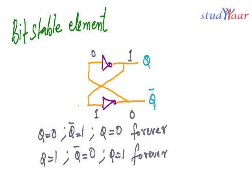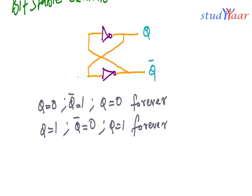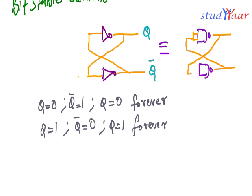This is your simplest memory element — it stores one bit of information. You can also draw this circuit using NAND gates. If you have a NAND gate here and a NAND gate here, with this as your output Q and this as your output Q-bar, with the same cross-feedback connections, both circuits are equivalent because the inverter has simply been replaced with a NAND gate.